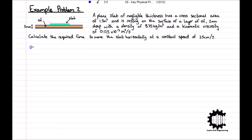For this problem, we will use the equation force equals stress times area, and also Newton's law of viscosity, where the applied shear stress, tau, is equal to the dynamic viscosity multiplied by the rate of shear strain. You will be able to find the derivation for Newton's law of viscosity in the original video. Combining these equations, we get the force required to push the slab, F, is equal to A times mu times du by dz.